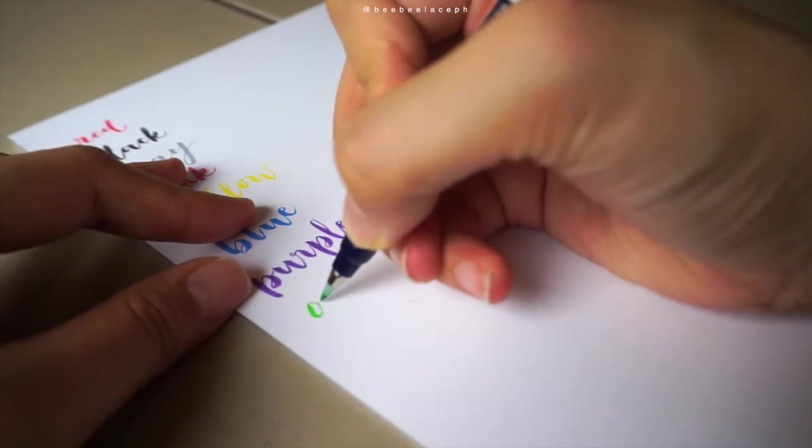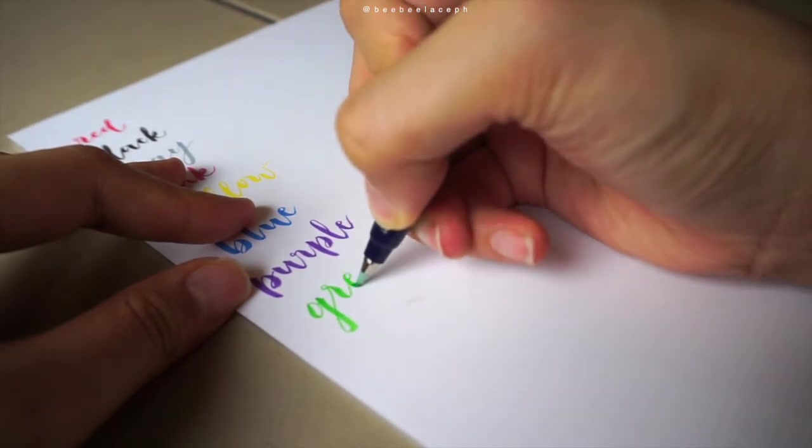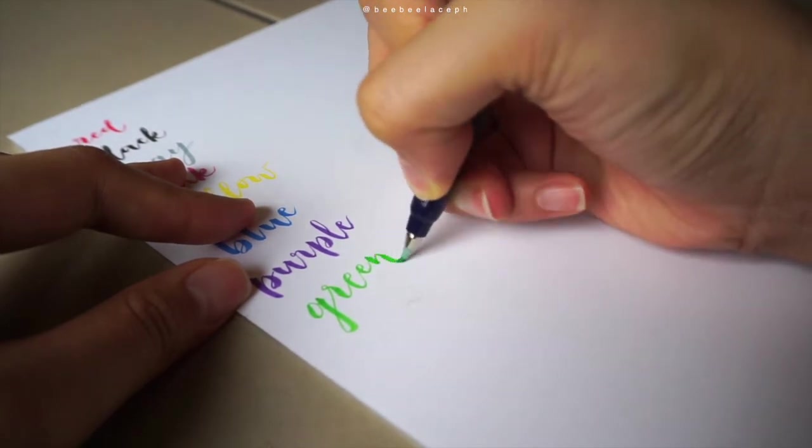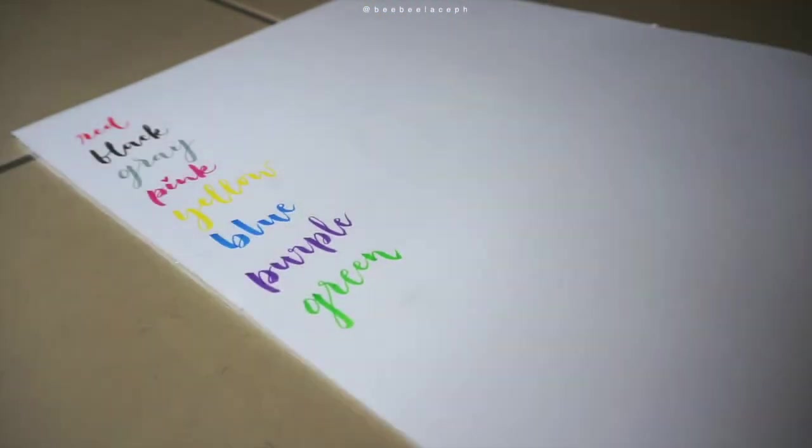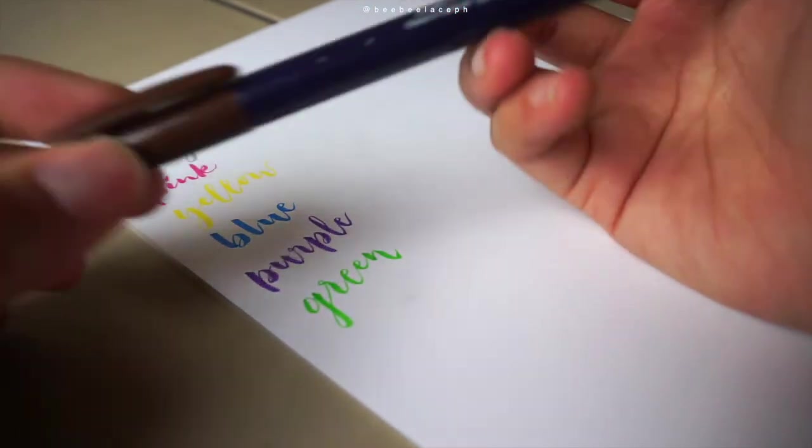Next, we have the green one. For a green color, okay din naman siya. Tama-tama naman. It's not like yellow green. And, it's not too dark green. It's the right kind of green. Oh, wow.